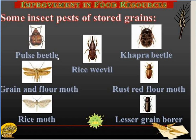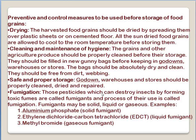In this slide you can see pictures of some insect pests that are a danger to stored grains, including pulse beetle, rice weevil, kapra beetle, grain and flour moth, rice moth, rust red flour moth, and lesser grain borer. All these are different pests that attack the grains. Now, in point form, let us discuss the preventive and control measures to be adopted before going for storage of food grains.